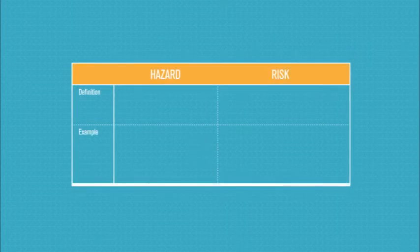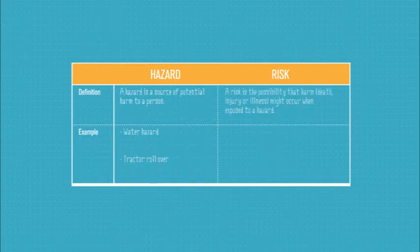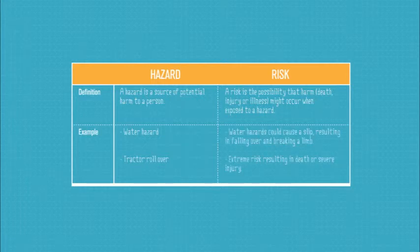This question often causes issues for students because you often don't quite know the difference between a hazard and a risk, or you get them the wrong way around. In terms of a hazard, it is a source of potential harm to you — for example, a water hazard or a tractor rolling over. A risk is the actual likelihood of harm occurring to you. Looking at the water hazard example, it could cause a slip risk, and you could slip over and break a limb — an arm or a leg — or get concussion.